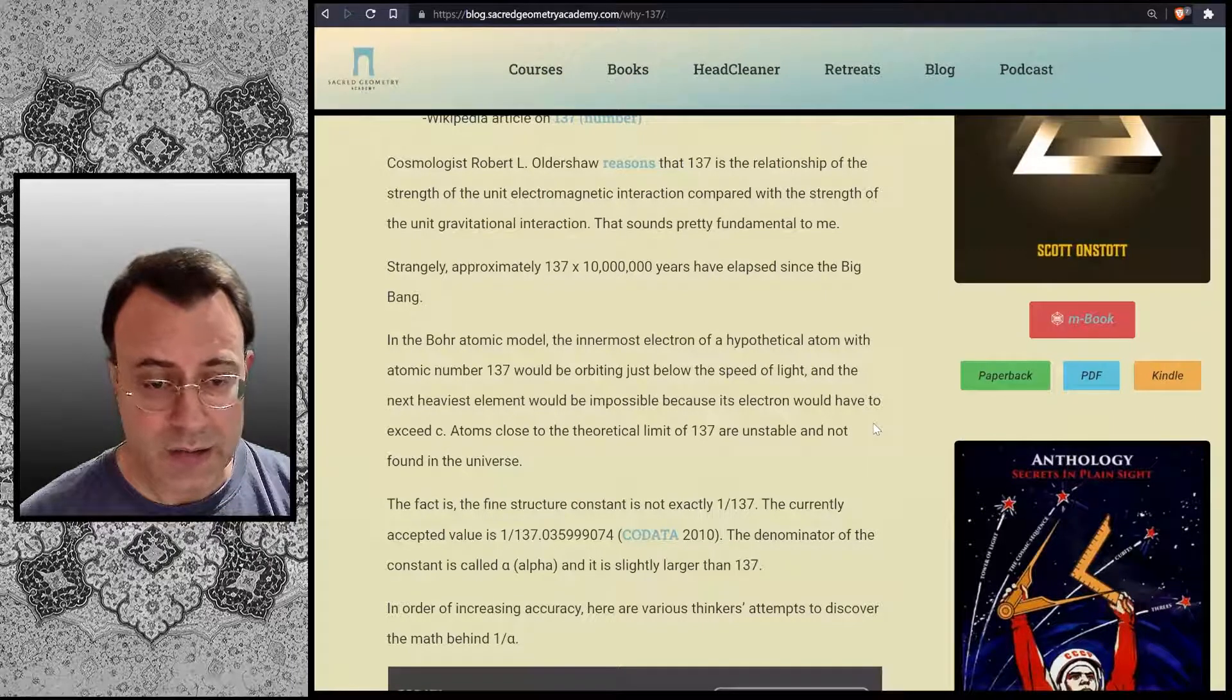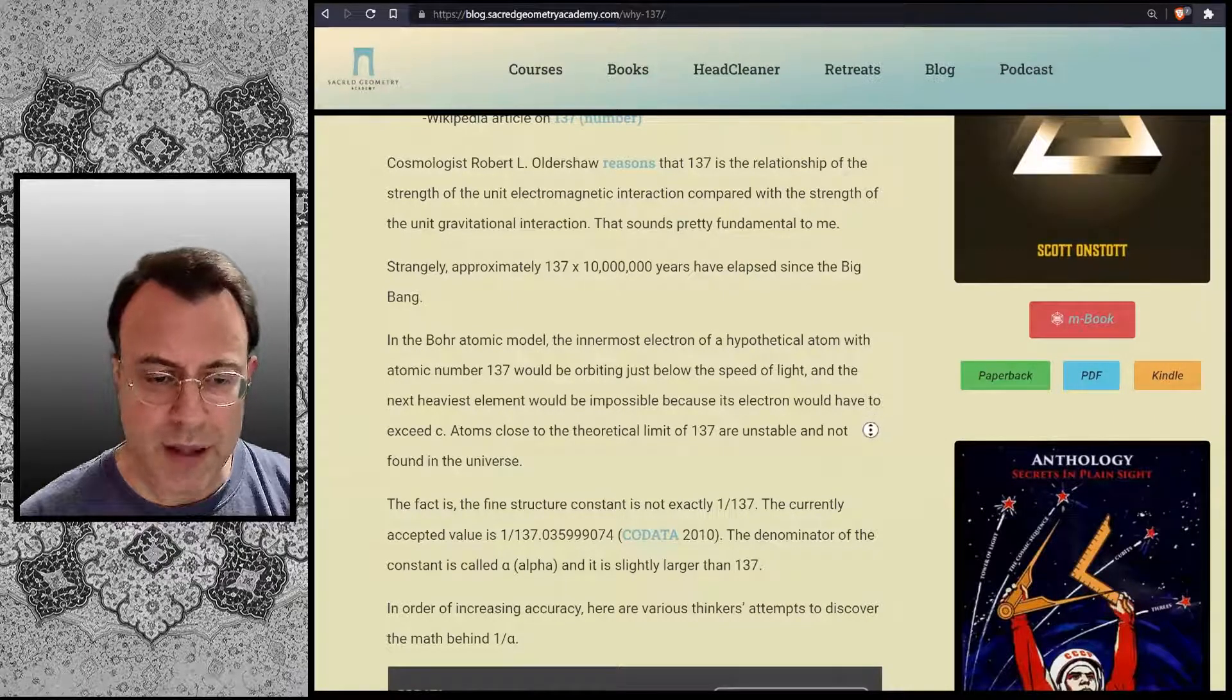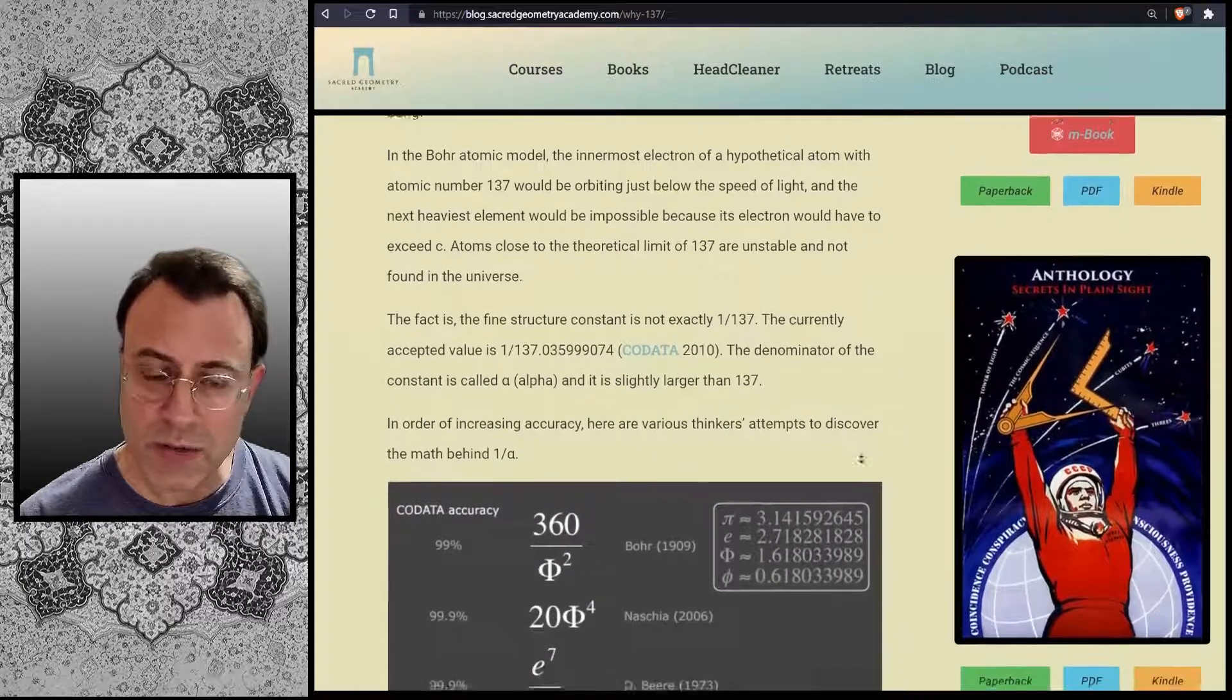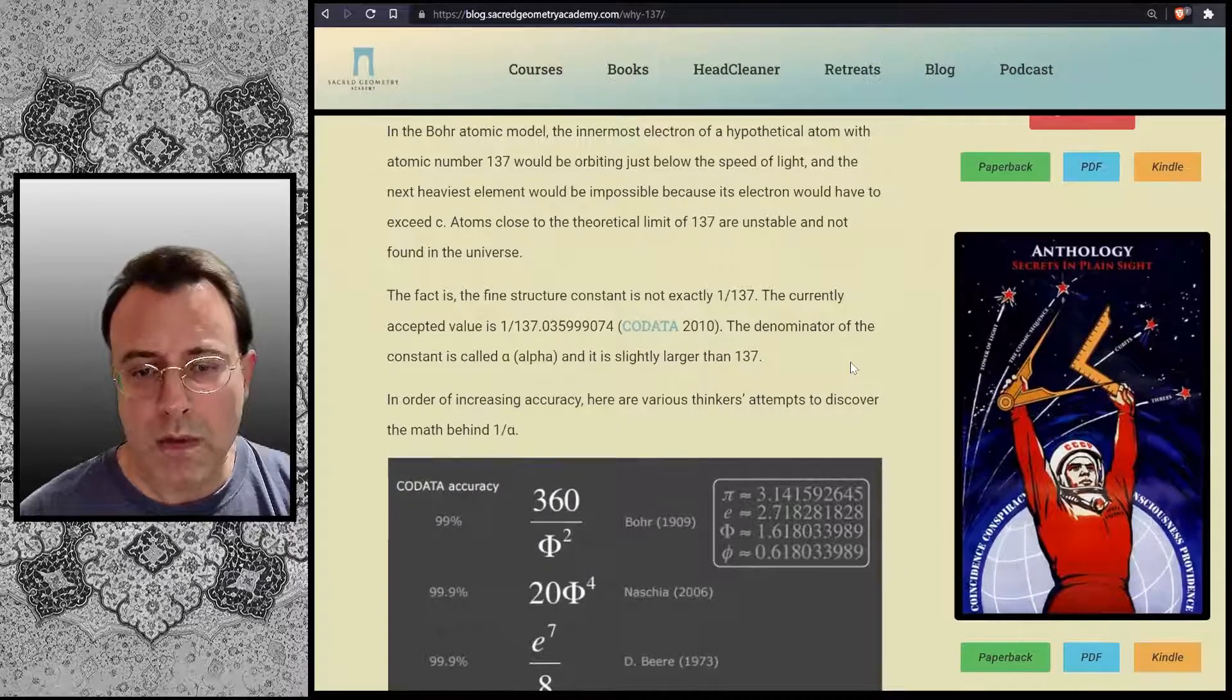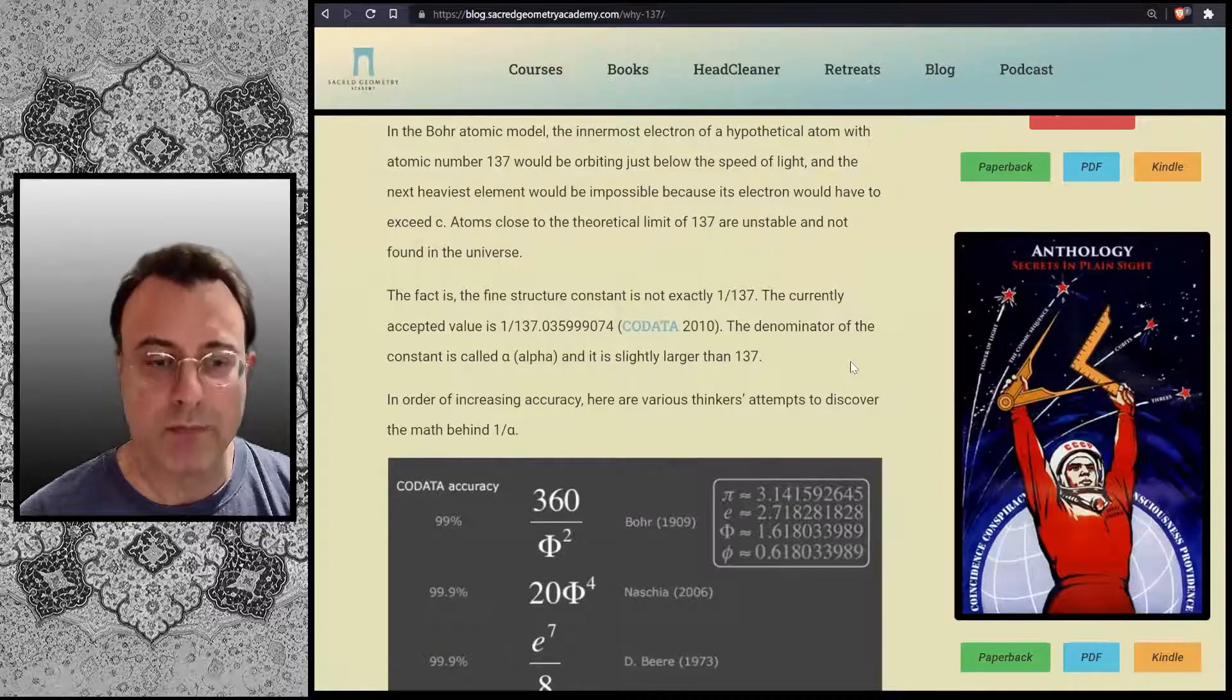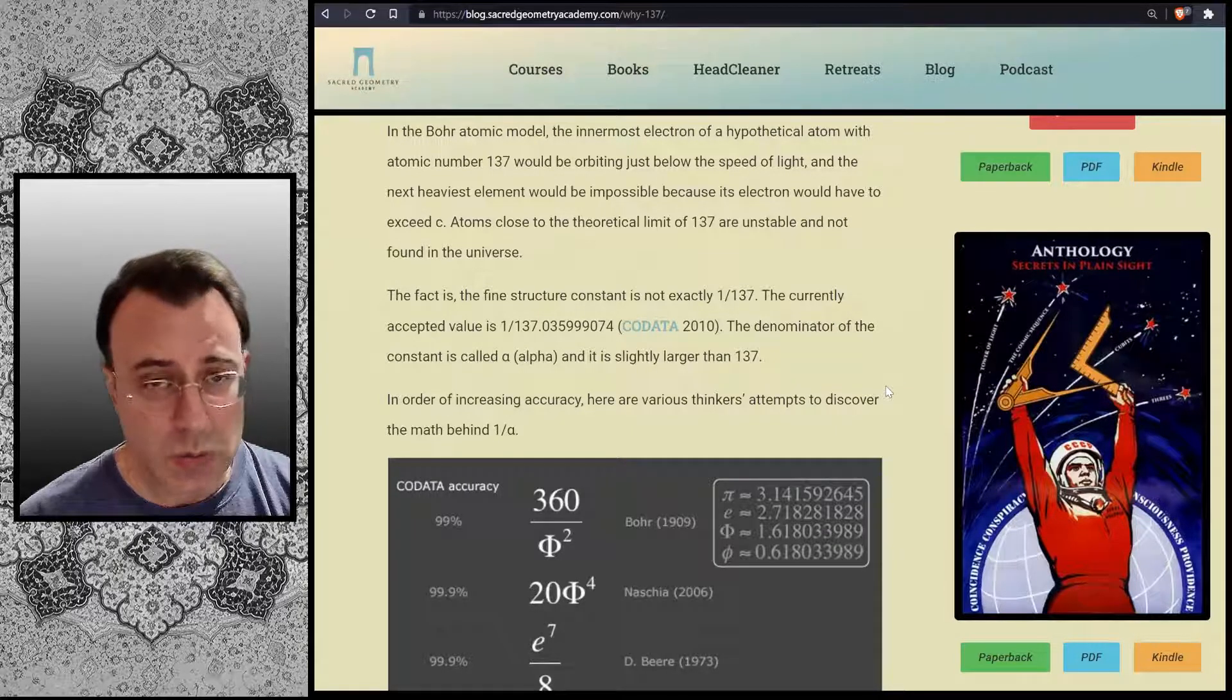The fact is, the fine structure constant is not exactly 1 over 137. The currently accepted value is 1 over 137.035999074. That's CODATA 2010. The denominator of the constant is called alpha, and it is slightly larger than 137. In order of increasing accuracy, here are various thinkers' attempts to discover the math between 1 over alpha.